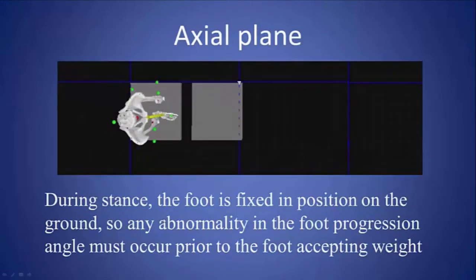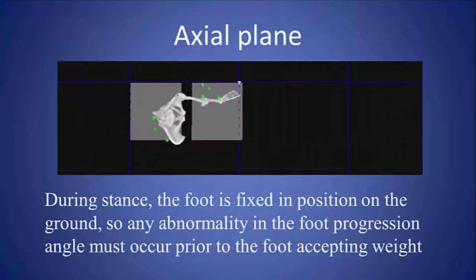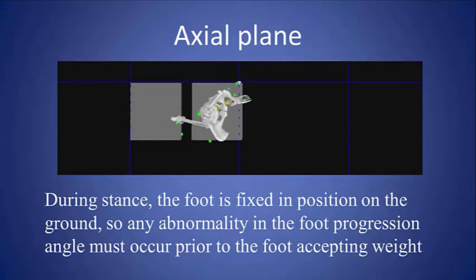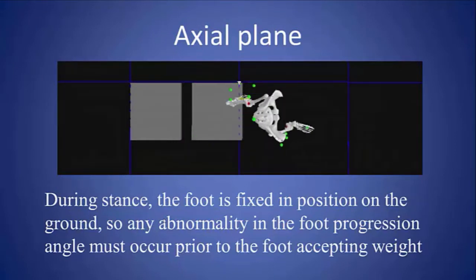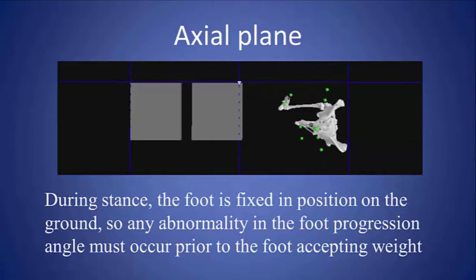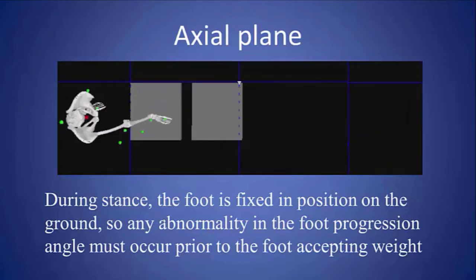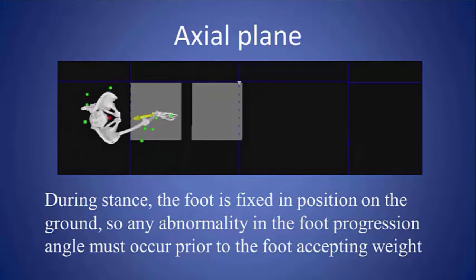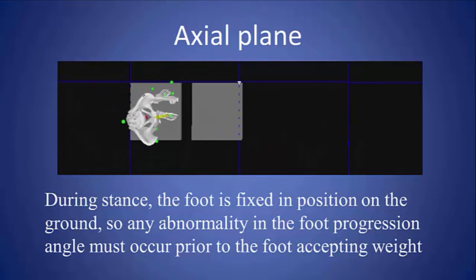Next we'll look at the axial plane. This is as if you are looking from the top down or up from the bottom — a view you don't actually have, but you can reconstruct in your brain from looking at the coronal plane, and the computer does quite a nice job of it.